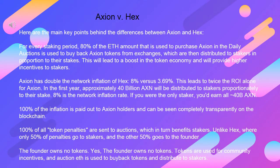Axion vs. HEX — here are the main key differences. For every staking period, 80% of the ETH used to purchase Axion in the daily auctions is used to buy back Axion tokens from exchanges, which are then distributed to stakers in proportion to their stakes. Axion has also doubled the network inflation of HEX: 8% versus 3.69%, leading to twice the ROI.